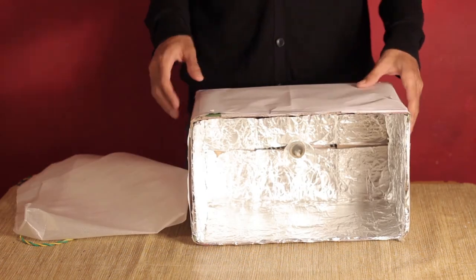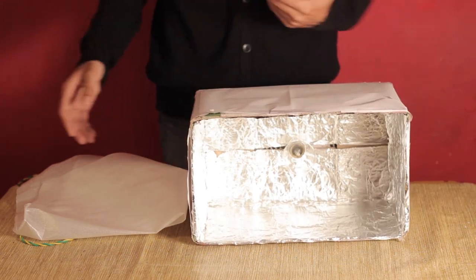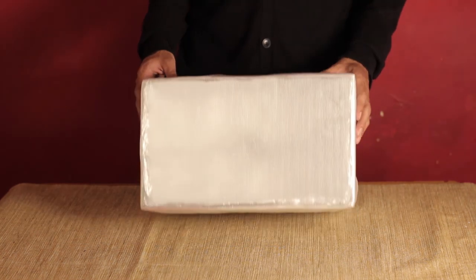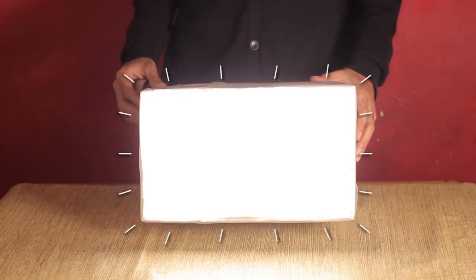Once you have the bulb in place, stick the open side of the box with butter paper or a translucent plastic like this one. Once you have the translucent plastic in place, you're good to go.